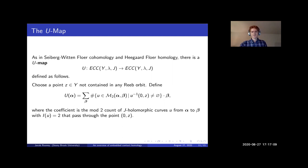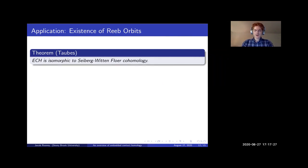So let's look at an application. Taubes proved that this embedded contact homology is isomorphic to the Seiberg-Witten Floer cohomology in dimension three. And actually you can give another proof of the Weinstein conjecture using this isomorphism. So there's a result of Kronheimer and Mrowka that says that Seiberg-Witten Floer cohomology is always infinitely generated. And so if you know that that's then isomorphic to embedded contact homology, you can always find a generator that gives you an embedded Reeb orbit. So that can actually be used to prove the Weinstein conjecture in dimension three. And it's kind of a further development of the theorem of Taubes that I mentioned earlier, where he proved the conjecture in dimension three, but you can actually do better.